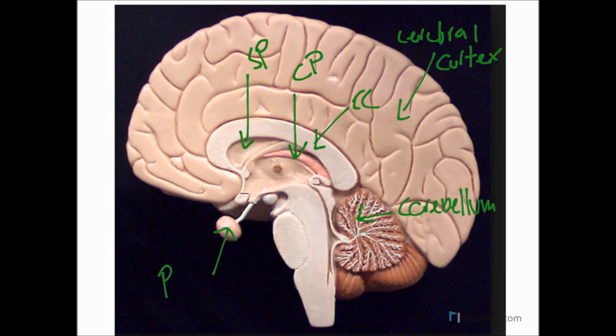Other structures that we must include would be the midbrain up here, the pons in here, and the medulla oblongata, which of course all belong to the brain stem. And right back here we've got the pineal gland, and this structure in here is the fornix coming from the hippocampus.